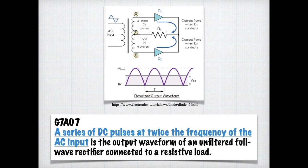And here you can see what is meant by a series of pulses, because it's not a continuous flat line. You're getting little pulses of the alternating current. For the exam, just know that a series of DC pulses at twice the frequency of the AC input is the output waveform of an unfiltered full wave rectifier connected to a resistive load.